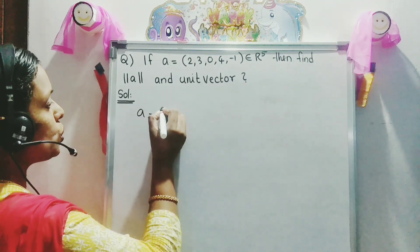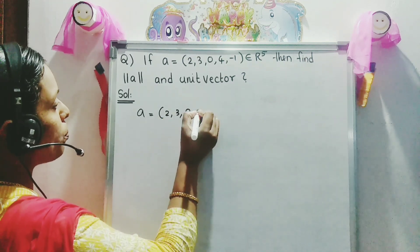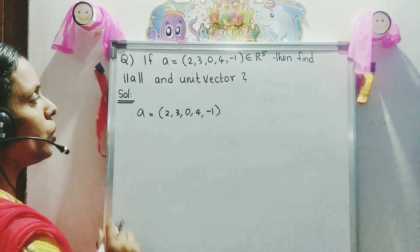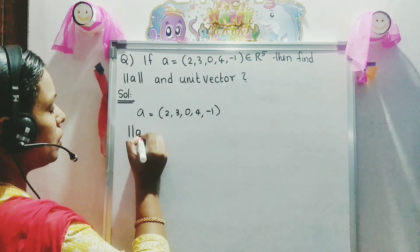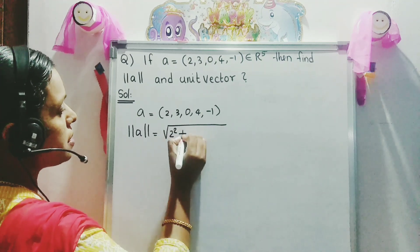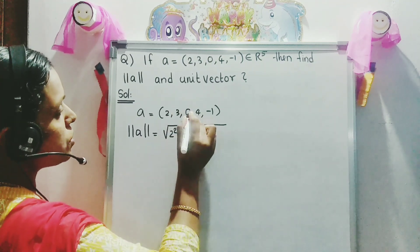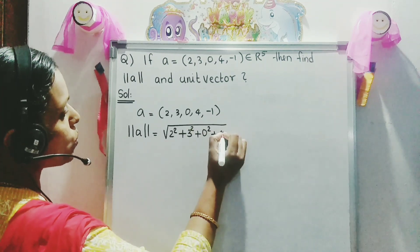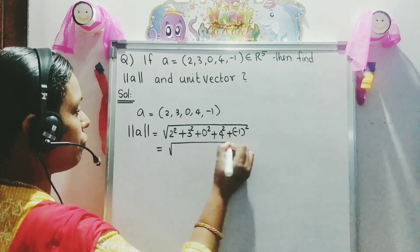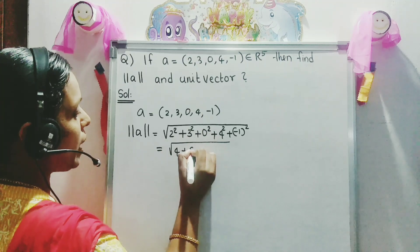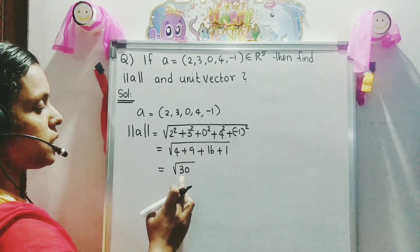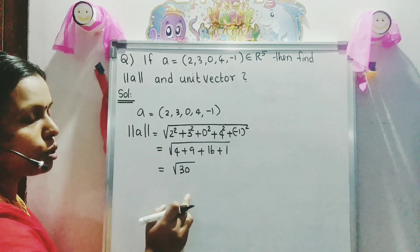Given A = (2, 3, 0, 4, -1). We want to calculate norm A. Norm A = √(2² + 3² + 0² + 4² + (-1)²) = √(4 + 9 + 0 + 16 + 1) = √30. So norm A is equal to √30.